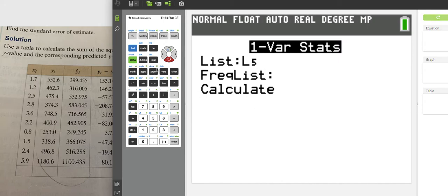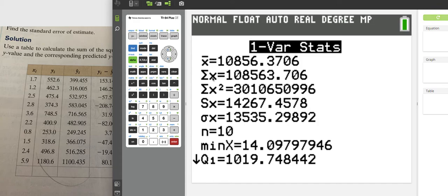This is going to calculate the sum for me and some other stuff. Here's the sum: sum of x is 108.563. We've got some other stuff here too, but that's the number I want for the calculation.